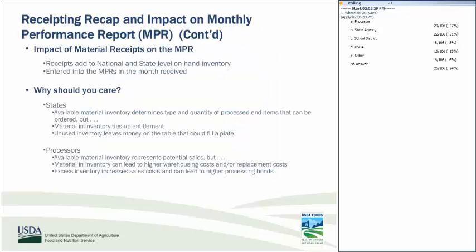Let's talk about the impact of material receipts on State and National Monthly Performance Reports, or NPRs. A sales order received at a processor adds to inventory on hand and is entered into the State and National NPRs in the month it is received. The order quantities receipted in the NPRs should match the goods receipt quantities in WebSCM. At the state level, available material inventory determines the type, quality, and quantity of processed end items that can be ordered, but unused inventory ties up entitlement and leaves money on the table.